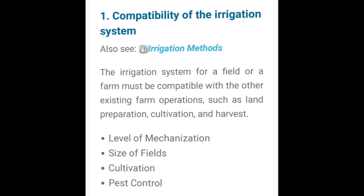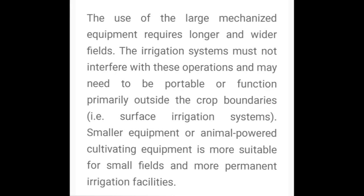जो irrigation system है, बहुत सारी चीज़ों पर depend करता है। जैसे आपने जो land prepare किया है, वो किस तरीके से prepare किया है, उसमें cultivation करवाया है या नहीं, और उसकी harvesting कैसी है। इन सब का record अगर आपके पास है, या आपको knowledge है — मान लो आपने rice की फसल लगाई, wheat की फसल लगाई — तो हर किसी का pattern अलग होता है।